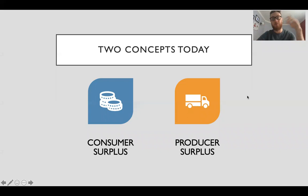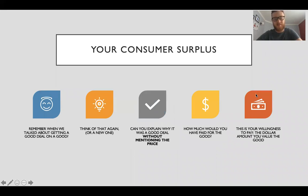Two big concepts today: consumer surplus and producer surplus. Your consumer surplus - remember when we were talking about getting a good deal on a good? Think of that again or a new time you got a good deal. Can you explain why it was a good deal without mentioning the price? Now think how much would you have paid for that good? That's your willingness to pay, the dollar amount that you value the good.